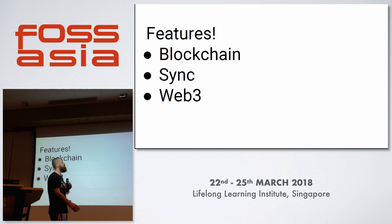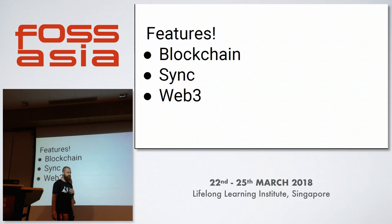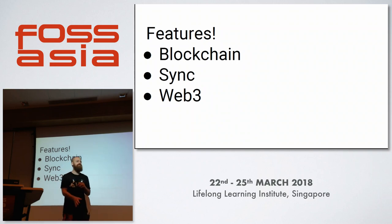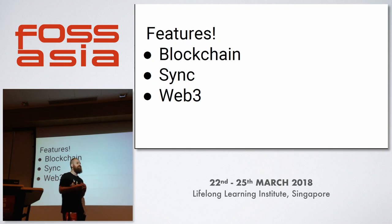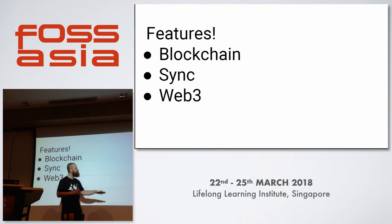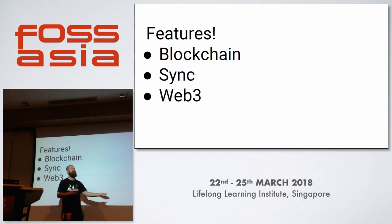The last feature area is something called Web3. Ethereum is made up of the blockchain — the economy part — but there's also code running there. As soon as you have code, you end up with functions, and these functions can be reused by other people. Web3 is basically a layer that allows easy access to well-known features already deployed on the blockchain.